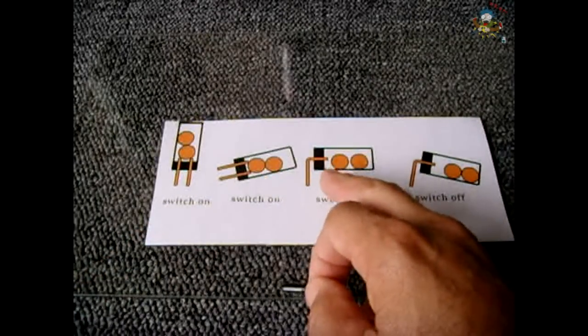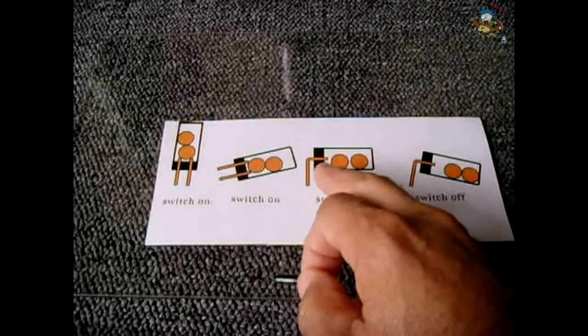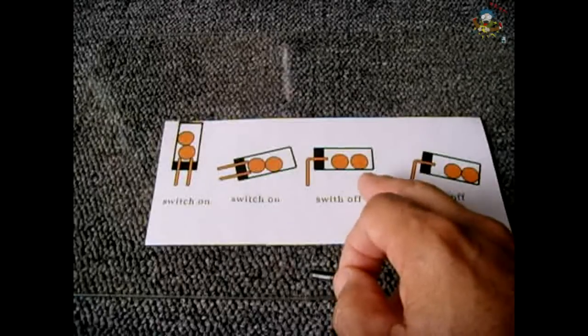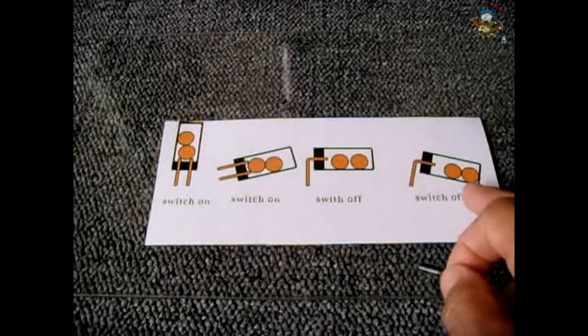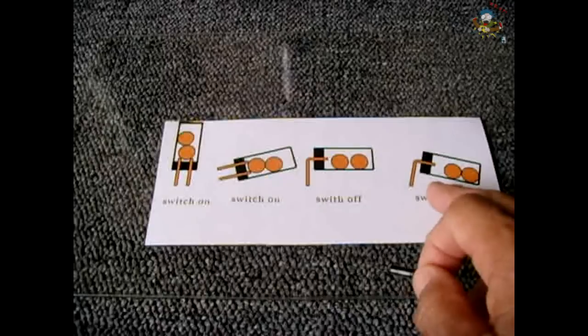Here you see the two balls started rolling to the right away from the contacts as the can was tilted downward and here at the sharper angle both balls are off to the side and you have an open circuit as well.